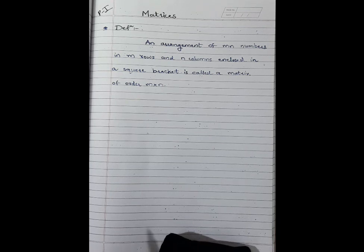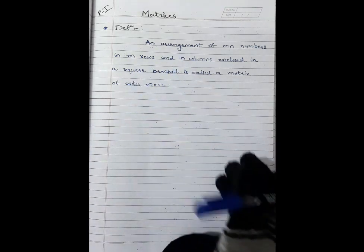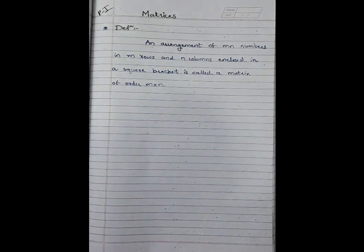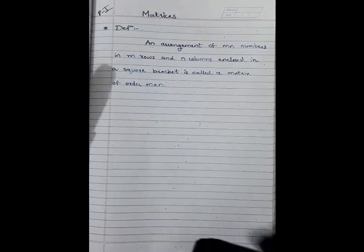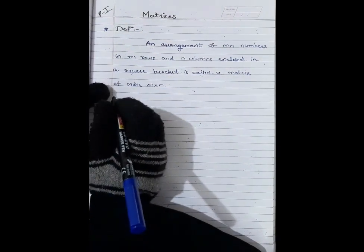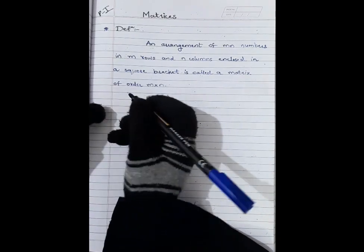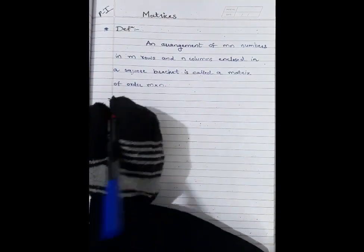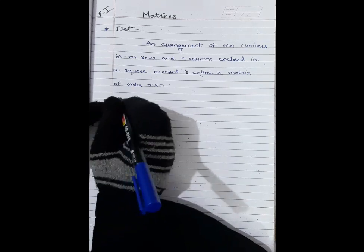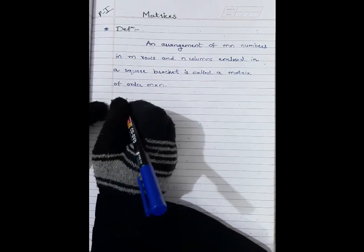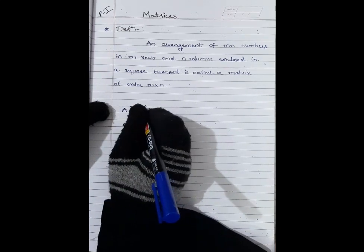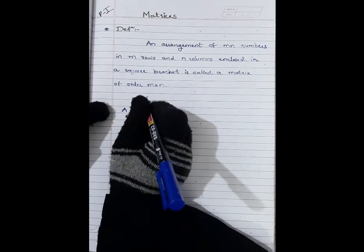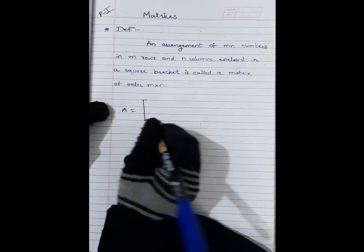A matrix is always an arrangement of m×n numbers enclosed between two square brackets. A matrix is always denoted by capital letters like A, B, C, X, Y, Z, etc.